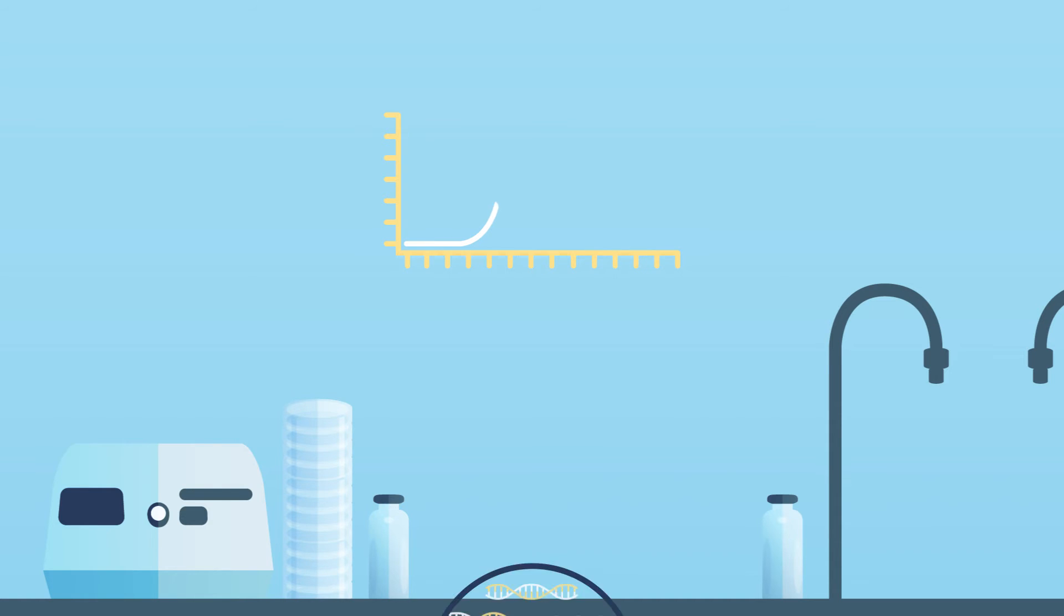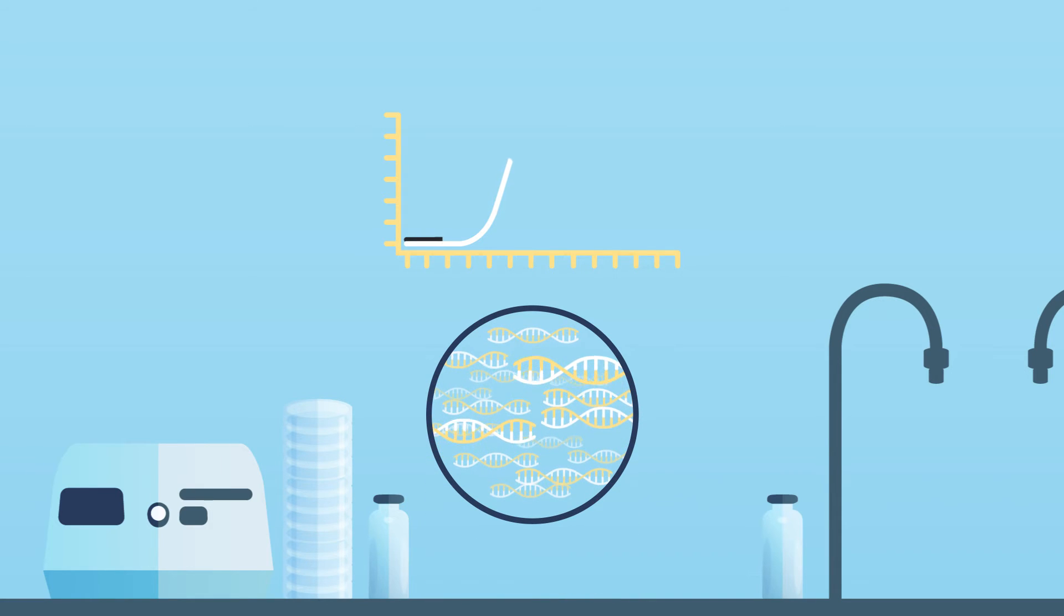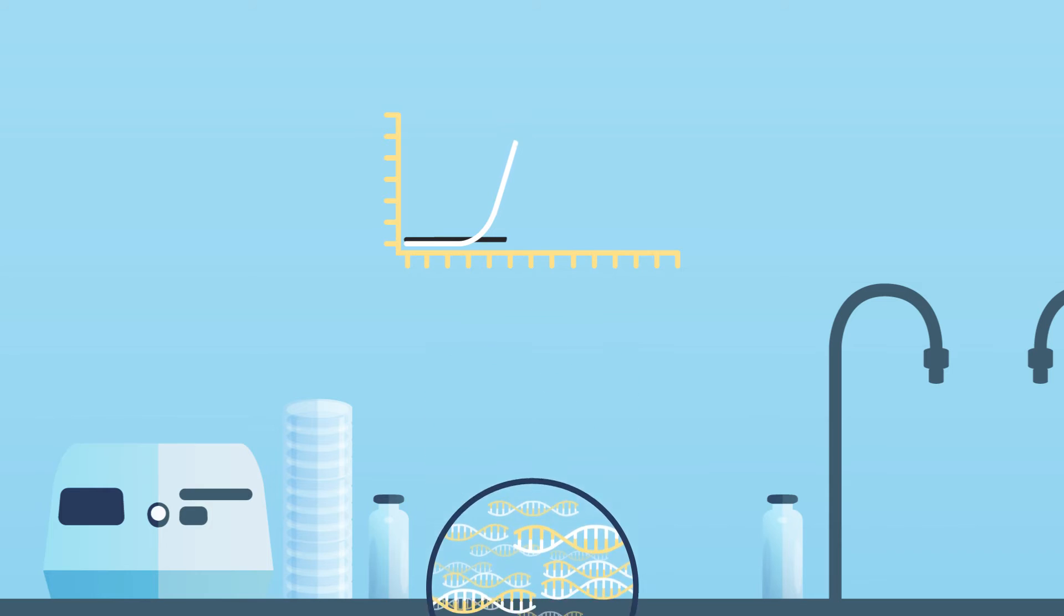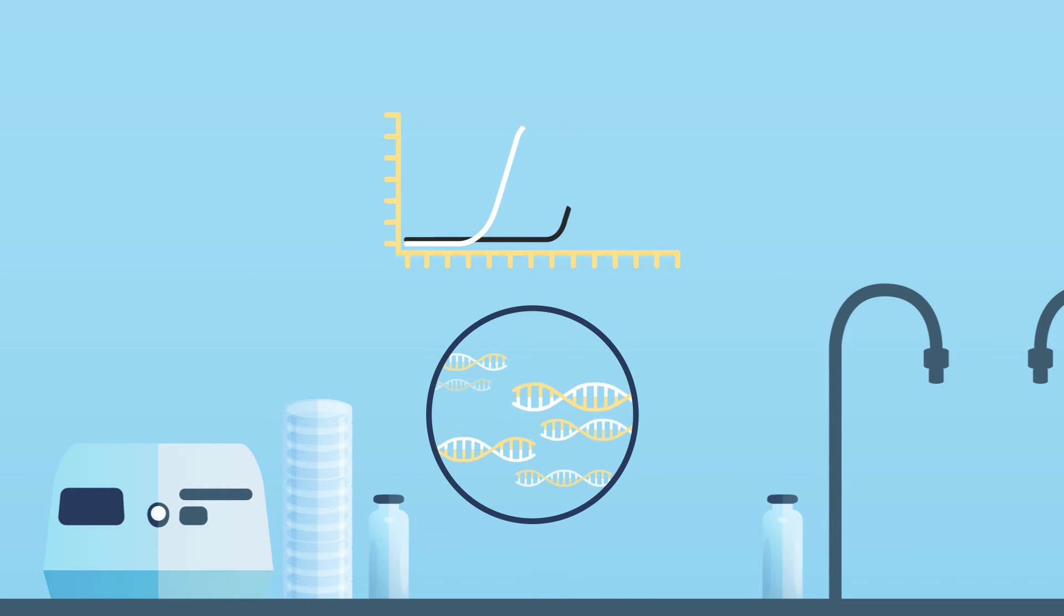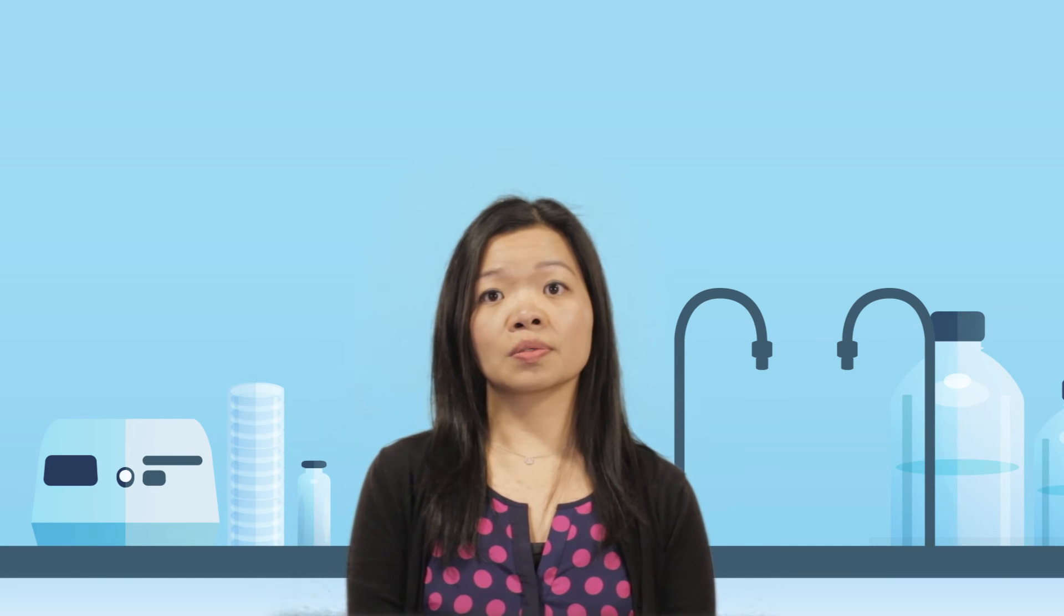If the sequence being amplified is abundant in the sample, the qPCR product is detected early in amplification. If the sequence is rare, then the product isn't detected until later. This allows for a high level of sensitivity and wide dynamic range, resulting in accurate quantitation.